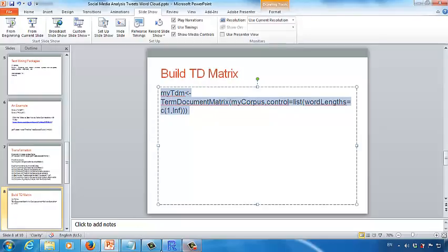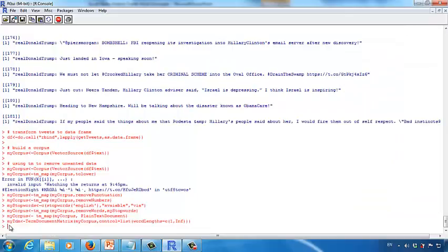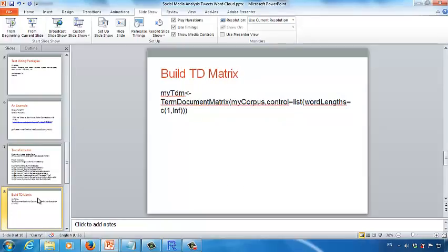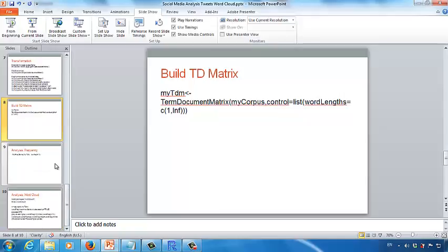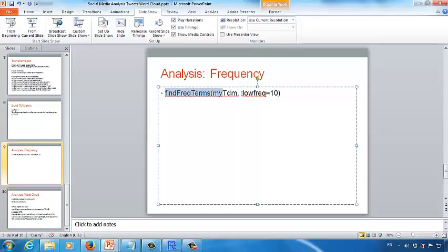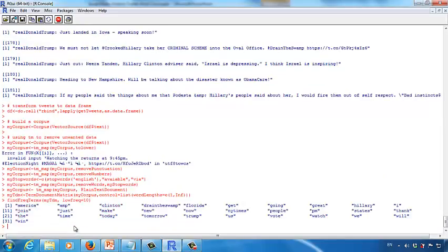After the data cleanse process, we want to build the term document matrix. Let's copy this code. And then we have the myTDM, term document matrix. By the way, the codes of transformation and TD matrix are very standard. They are given by the R community. So we don't have to develop the codes again. Next, let's see the most frequently appeared terms in the matrix. Let's copy this code. And then paste it into the R software. Like you can see, the most frequently appeared terms in Donald Trump's Twitter account is America, Clinton, Florida, Get, Going, Great, Hillary, and so on. These are the examples of most frequently appeared terms.